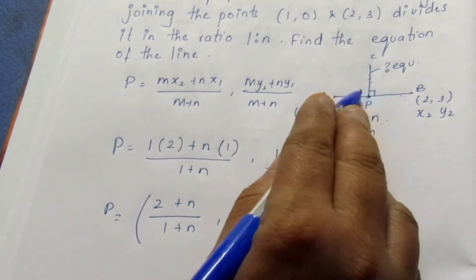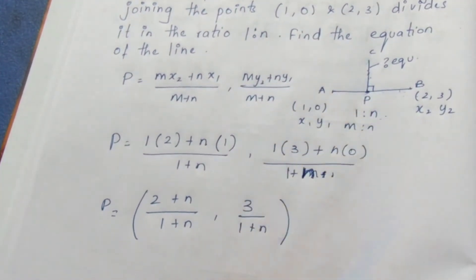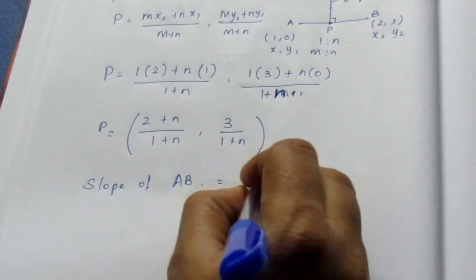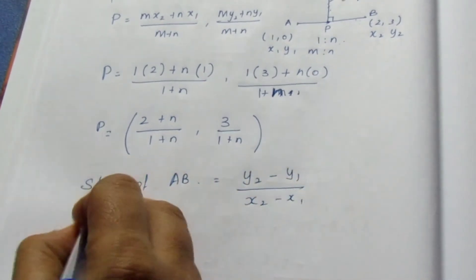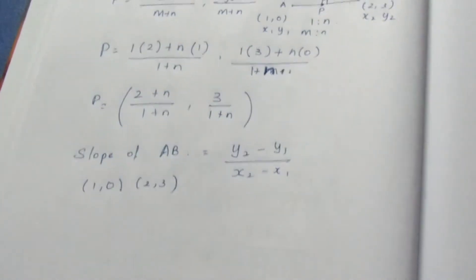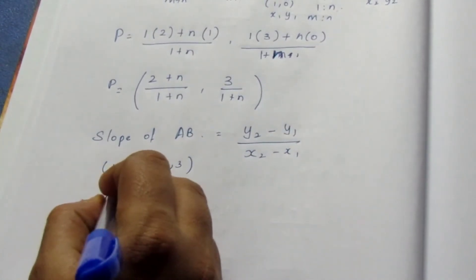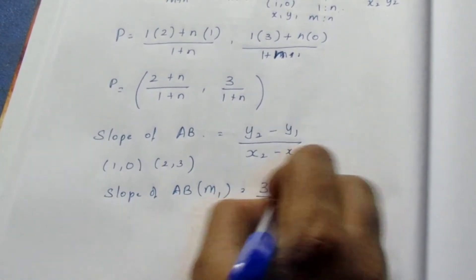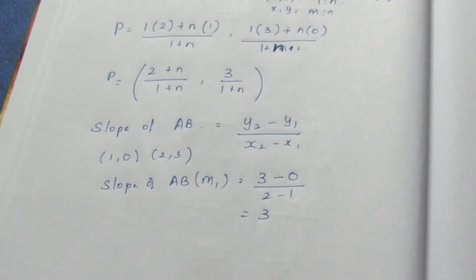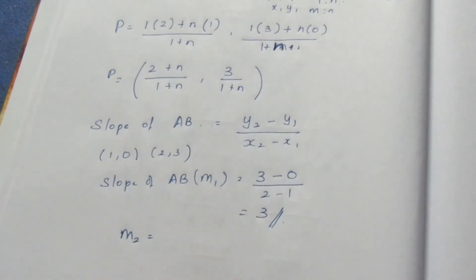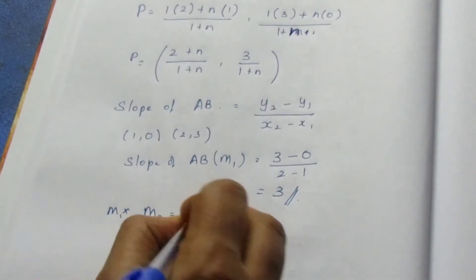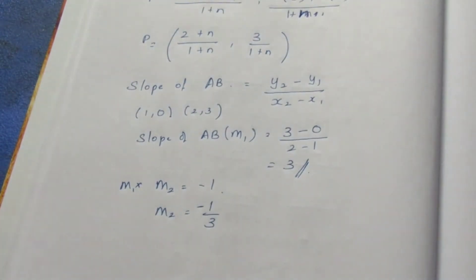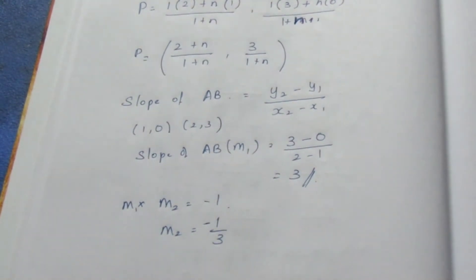Now I know point P as ((2 + N)/(1 + N), 3/(1 + N)). As I said before, we can find the slope of AB to find the slope of PC. The slope of AB using the two-point formula is (y2 - y1) / (x2 - x1). Substituting points (1, 0) and (2, 3): M1 equals (3 - 0) / (2 - 1) which equals 3. So M2, using M1 × M2 = -1, will be -1/3.